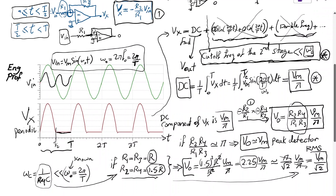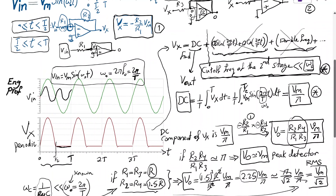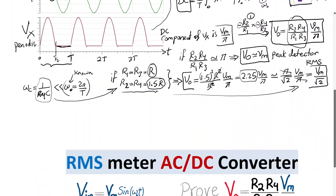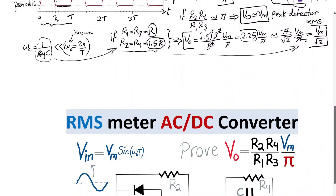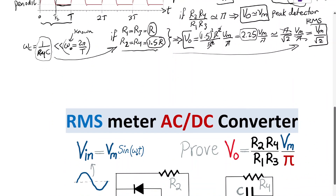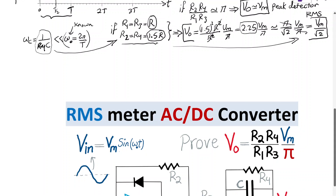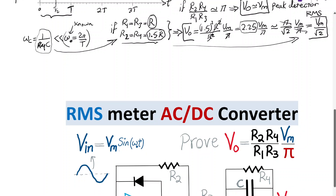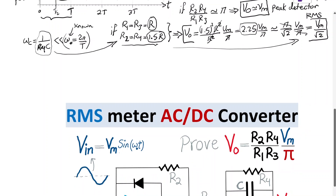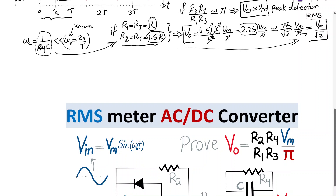I hope this example is helpful in showing how a peak detector or RMS meter AC-DC converter works, using a cascade of a half-wave rectifying amplifier followed by a low-pass filter amplifier.